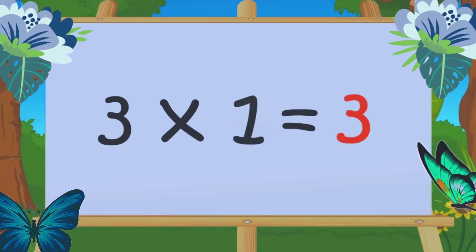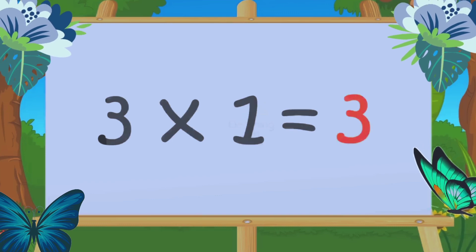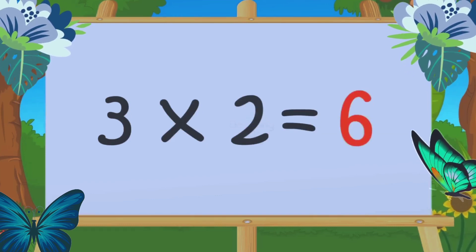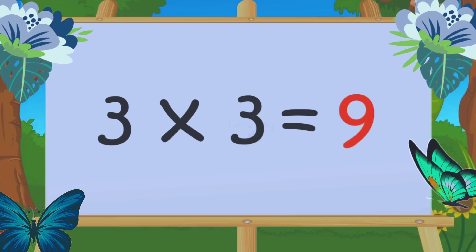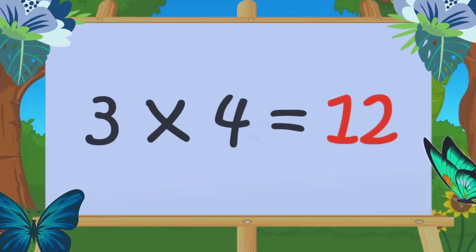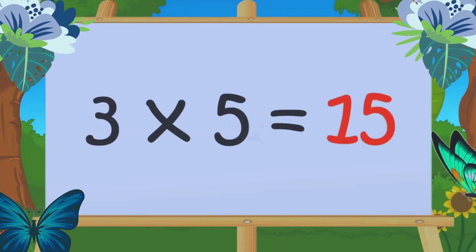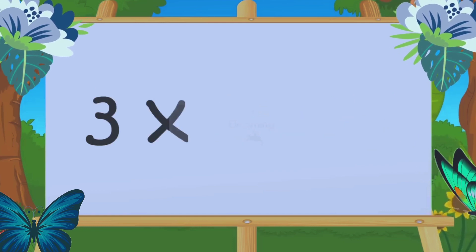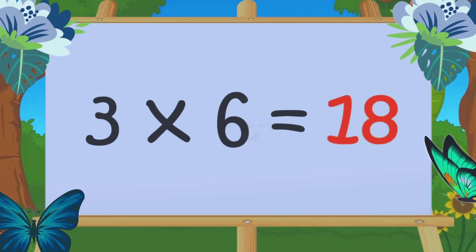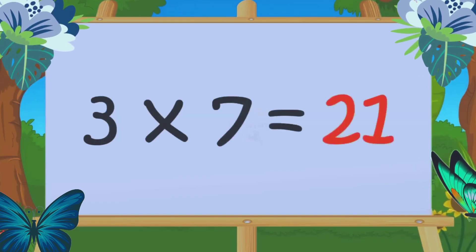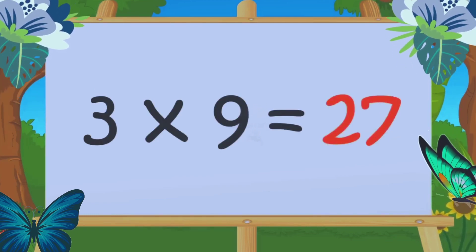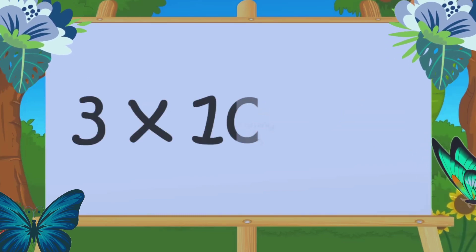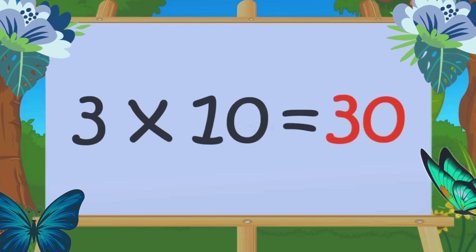Table of 3: 3 1s are 3, 3 2s are 6, 3 3s are 9, 3 4s are 12, 3 5s are 15, 3 6s are 18, 3 7s are 21, 3 8s are 24, 3 9s are 27, 3 10s are 30.